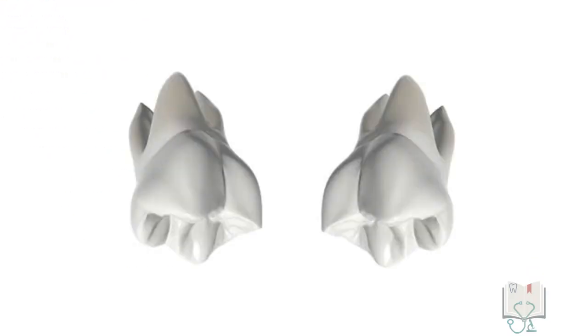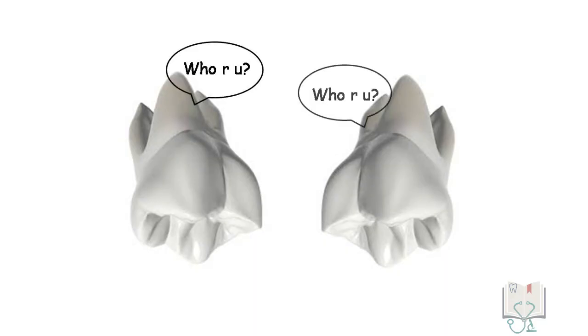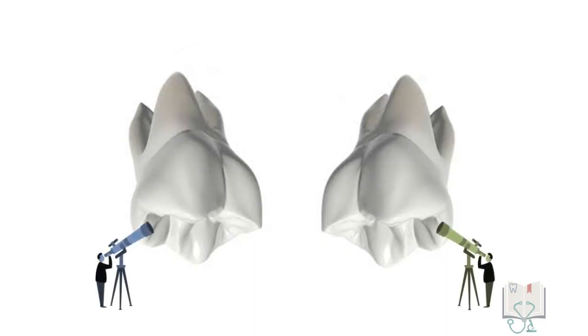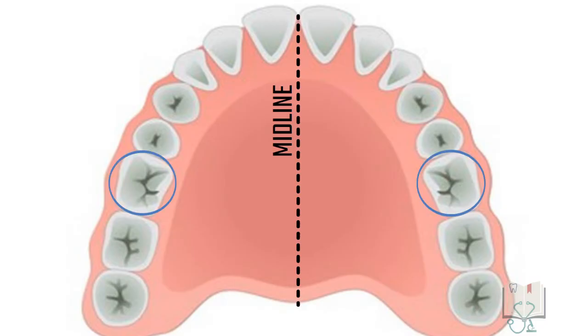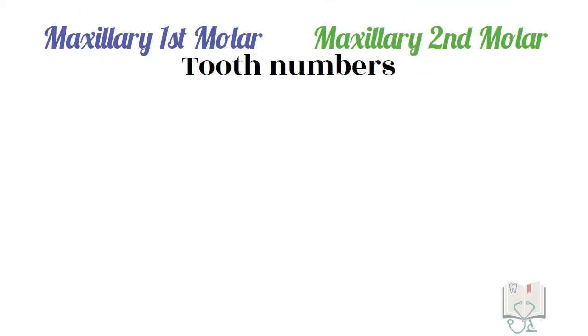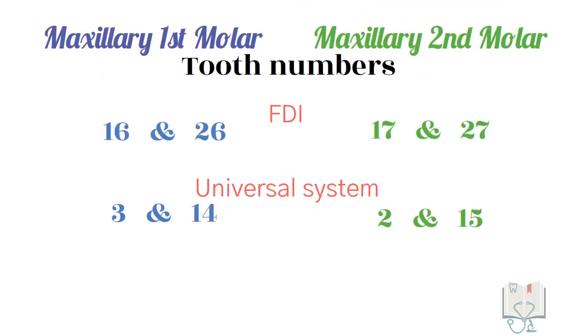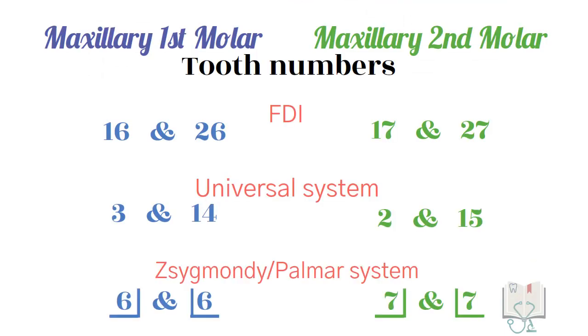Permanent maxillary first molar and second molar are morphologically very similar to each other, so learning the few differences present between them is important in their differentiation. Starting with some general features, maxillary first molar is the sixth tooth from the midline and second molar is the seventh tooth from the midline, which gives the two teeth different tooth numbers in various tooth notation systems.